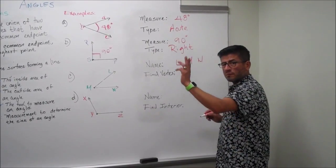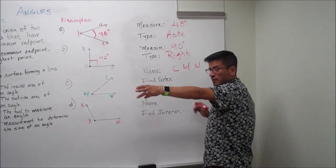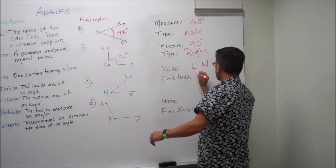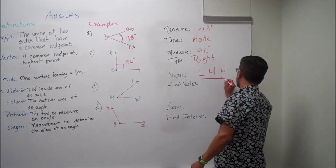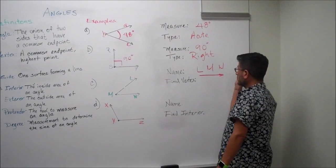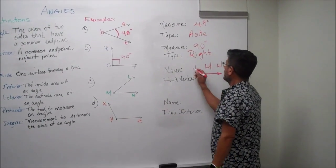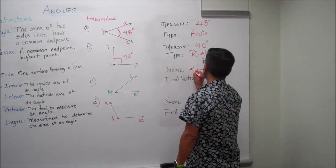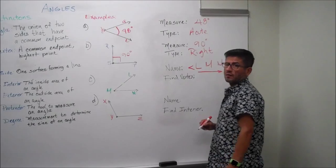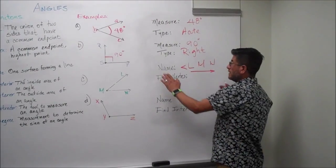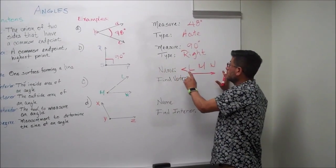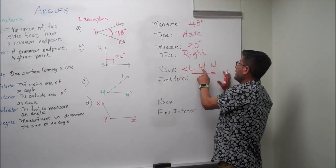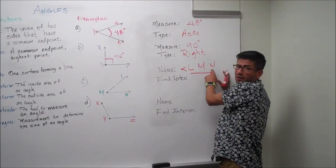So you want it from left to right. You do a little arrow pointing to the right and a little symbol for angle. And that's how you name your angle: L, M, N.